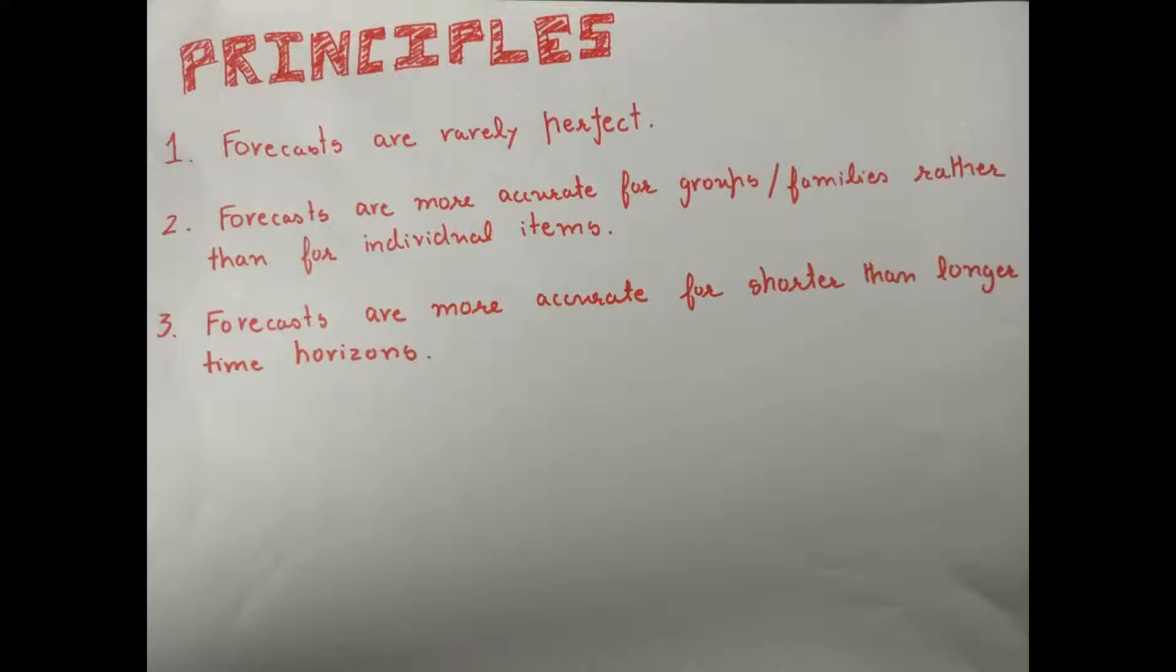Forecasts are more accurate for groups or families of items rather than individual items. When items are grouped together, the individual high and low values can cancel each other out. The data for a group of items can be stable even when the individual items in the group are very unstable.